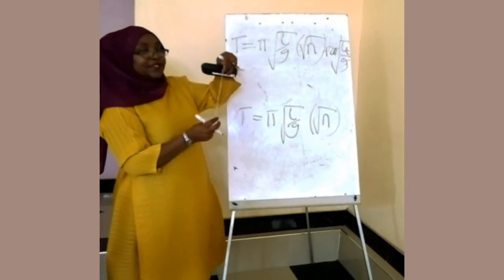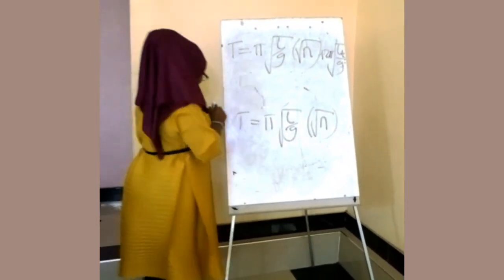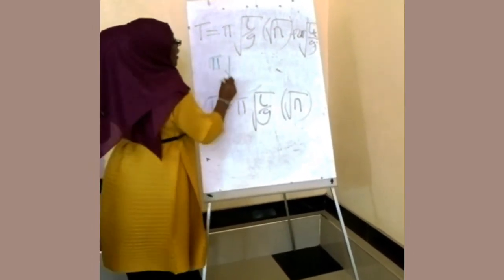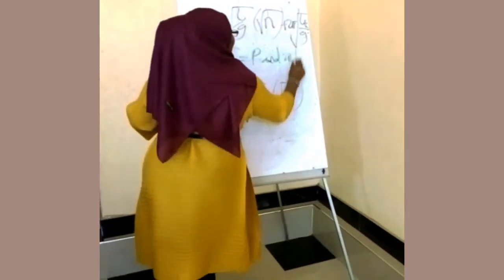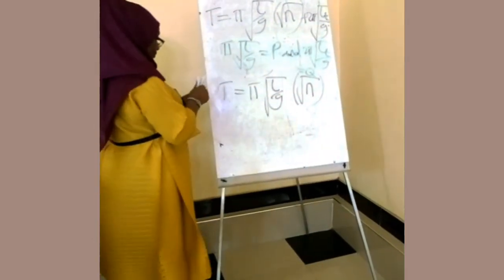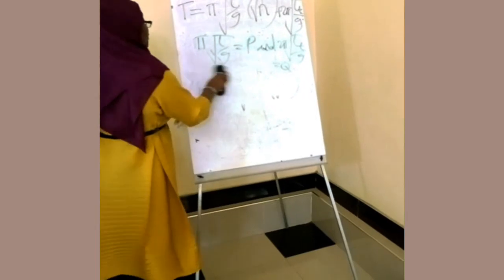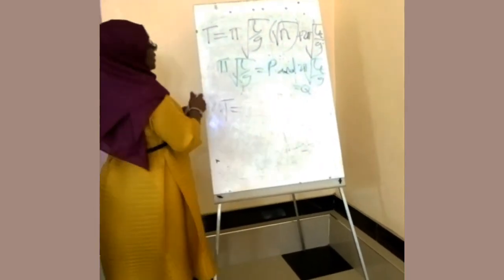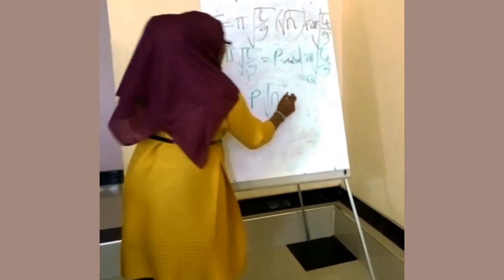Also, the length of the pendulum loop is constant. So our formula becomes: if we let π √(L/G) equal P, and 2π √(L_T / G) equal Q, then the formula will be T is equal to P√N plus Q.